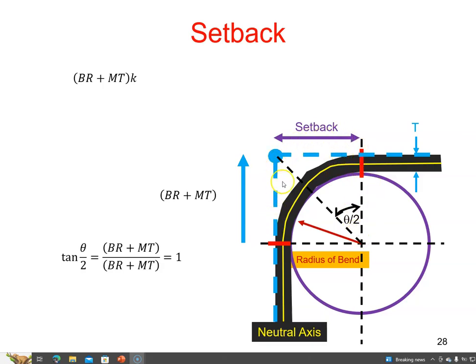...is basically the setback divided by the bend radius plus the material thickness, and that equals one, which is what the K factor was. So this suggests that the K factor is in fact the tangent of the bend angle divided by two.